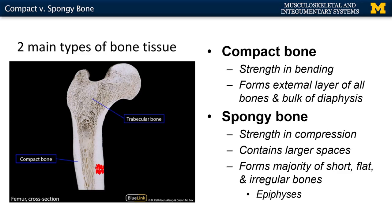Compact bone is also important in terms of the bulk of the shafts or the diaphysis of all long bones — you'll have it in the majority of the long portion of long bones. Spongy bone, on the other hand, is important for strength in compression, so you'll find it in areas where you have joints. The ends of bones, or the epiphyses, are made up of almost exclusively spongy bone, except for that small outer layer of compact bone.